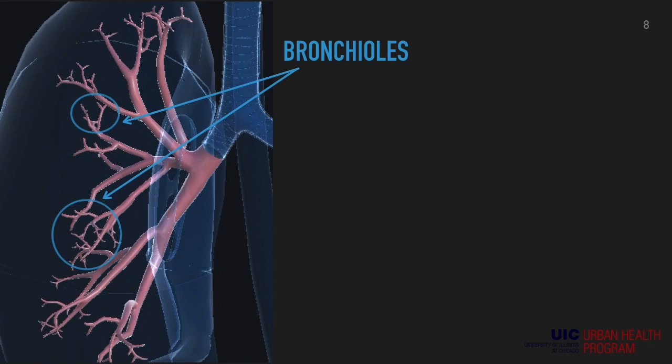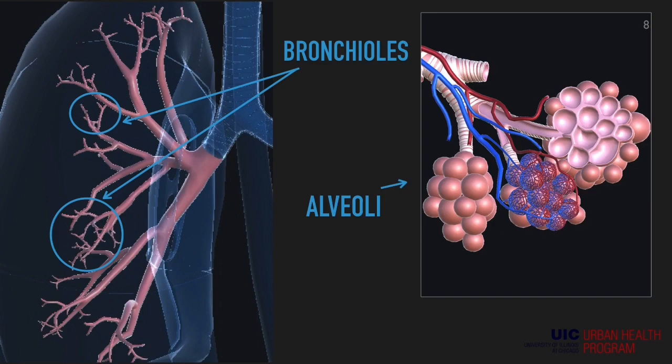Finally we reach the bronchioles, and at the very end of these we see alveoli. They are very important to the respiratory system because they exchange oxygen and carbon dioxide to and from the bloodstream.